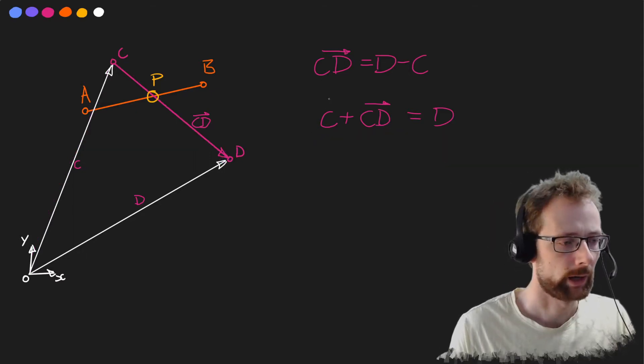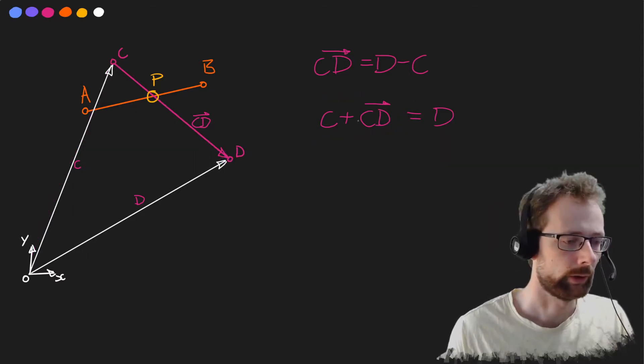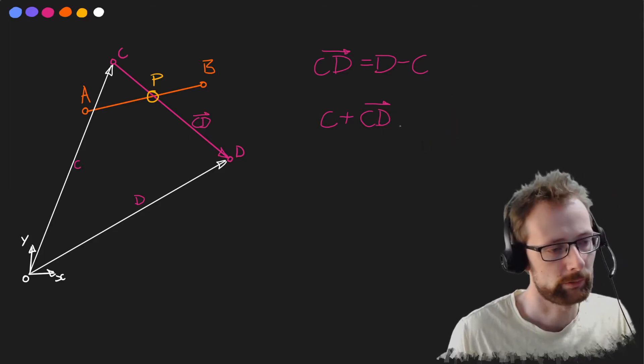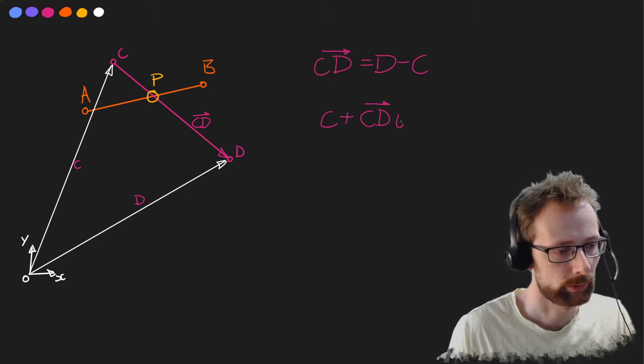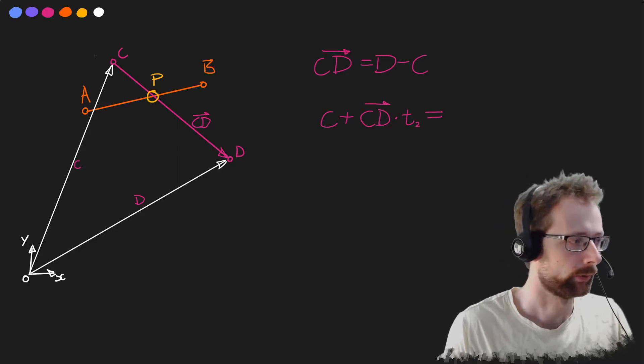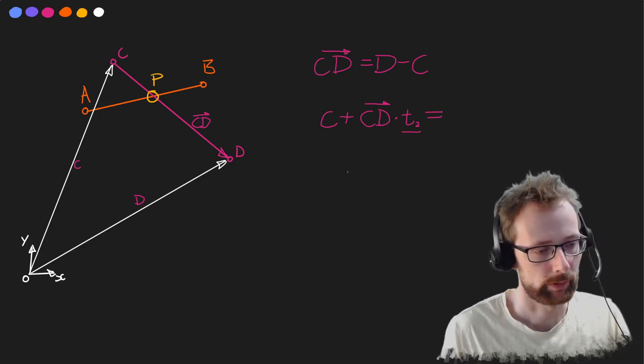Now what's nice about this representation, we don't want to get to d, we want to get to some other point along the line. So let's put in a variable, a scalar, which we'll call t2 actually. And now where do we get to along the line? Well it really depends on the value of t2.